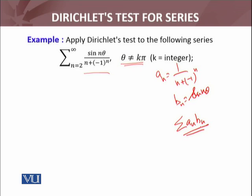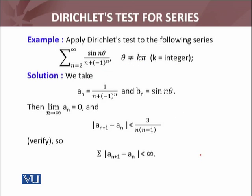Now I will check the conditions. First condition: limit n approaches infinity an must be zero. Then I will check an+1 minus an - its absolute value, whether summation is less than infinity or some real number, in other words whether this is absolutely convergent. We take an equals this one and bn equals this one. Then limit n approaches infinity an, I know this will be zero - 1 over infinity equals zero. So the first condition is satisfied.